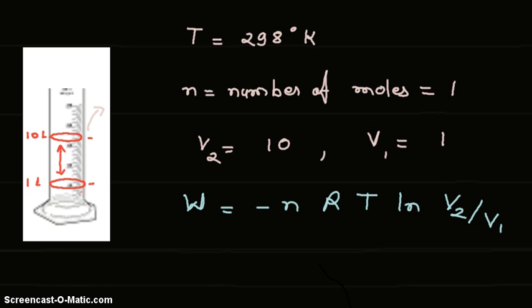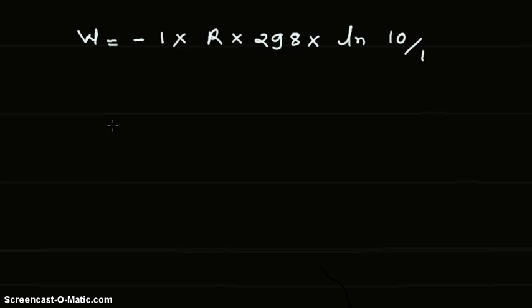Substituting these values, we get: number of moles is 1, R is the gas constant, temperature is 298, and ln(10 liters / 1 liter).